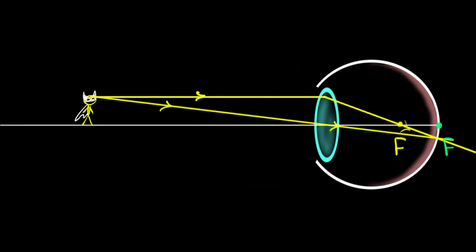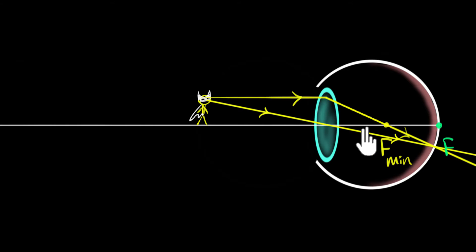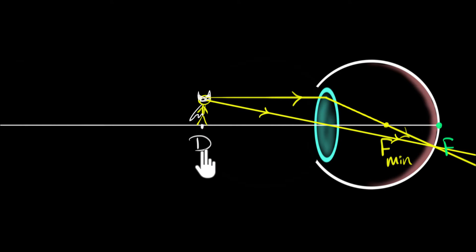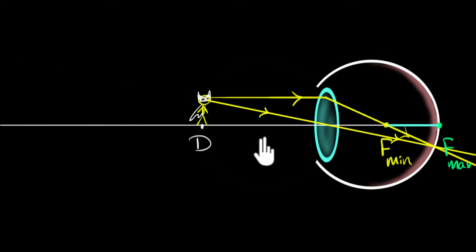But there's a limit to how small the focal length can be. At a particular distance, the focal length of our eye becomes minimum — it cannot become any smaller. And as a result, if the object were to come even closer, you can't see it clearly. We call this point the near point, represented by D. The key thing to remember is that as the object distance changes, our eyes adjust their focal length across a range of values, ensuring that rays of light always focus onto the retina. If you need more clarity on this, go back and watch that previous video.